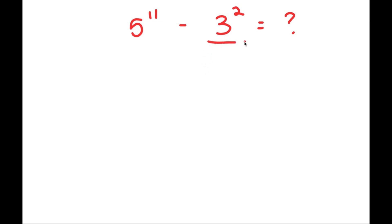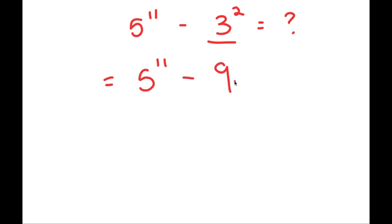So first, I'm actually just going to solve 3 squared, which is simple — it's 9. So this turns into 5 to the power of 11 minus 9.